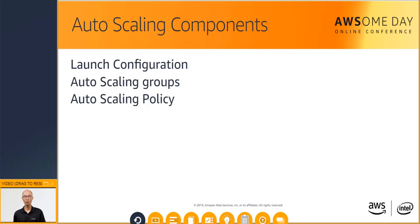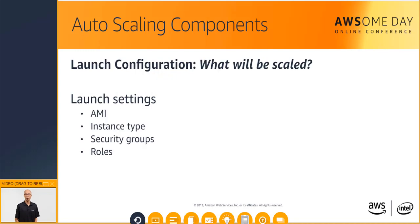A launch configuration defines what will be launched by auto-scaling — think of all the things you would specify when launching an EC2 instance from the console: which Amazon Machine Image to use, what instance type, and which security groups or roles to apply to the instance.